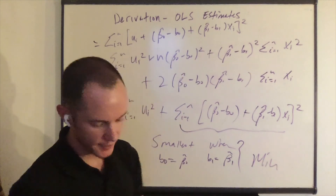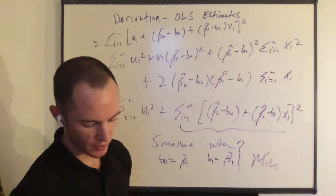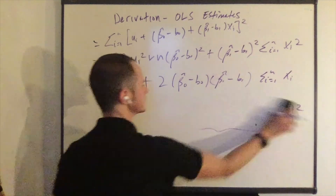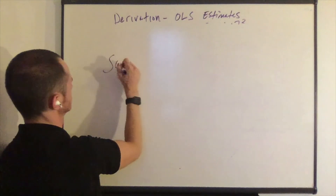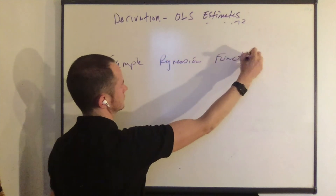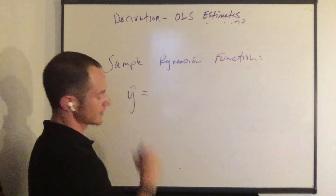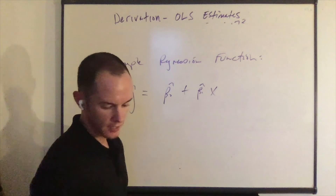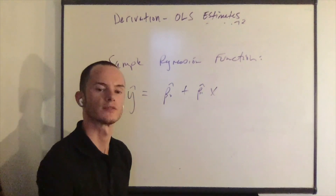So all this work gets us to the sample regression function, which is the sample counterpart to the population regression function. The sample regression function is: y hat equals beta naught hat plus beta one hat times x.